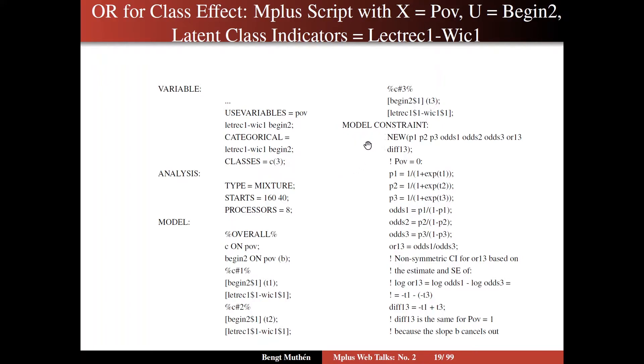In the model constraint command, you define these new parameters: probabilities, odds, and odds ratio. At the poverty level of 0, you compute the probability of the outcome for class 1, for class 2, and for class 3, corresponding threshold values varying from T1 to T2 to T3. That's the probability of getting the beginning item right at wave 2 for the three different classes. The odds are then the ratio of the probabilities P1 divided by its complement, getting it wrong, 1 minus P1, and odds for 2 and odds for 3.